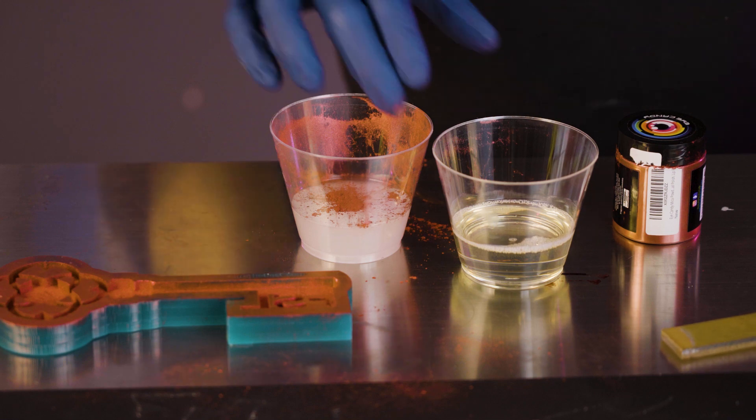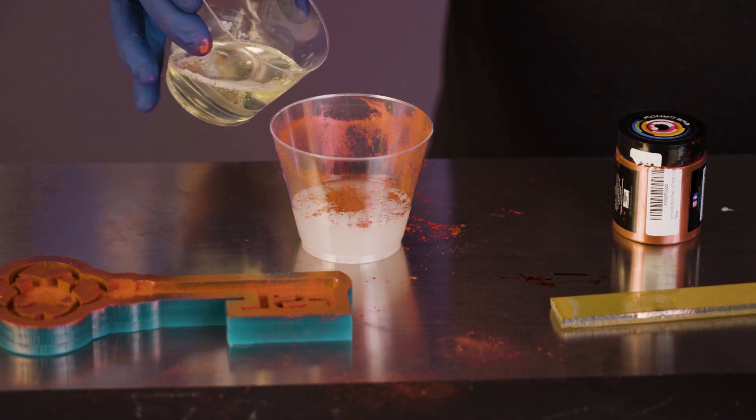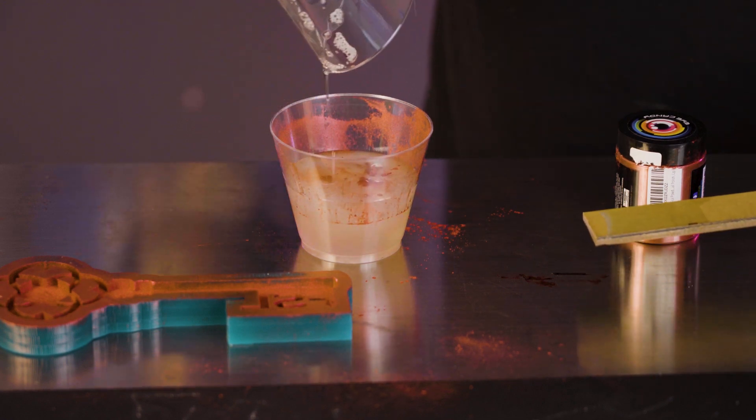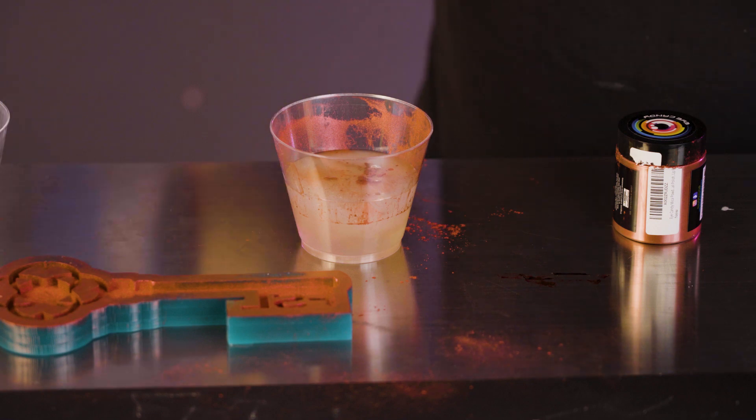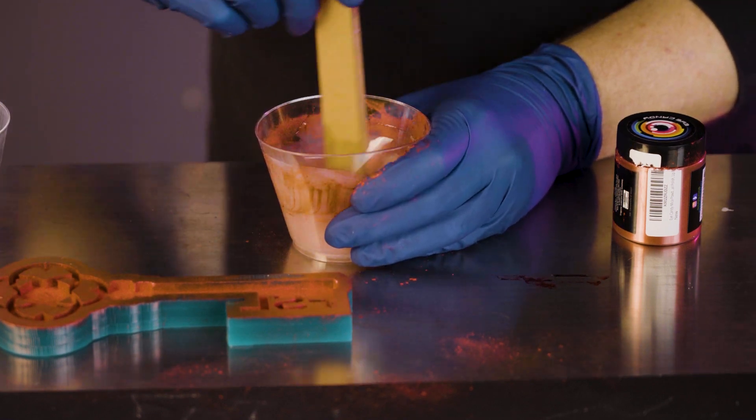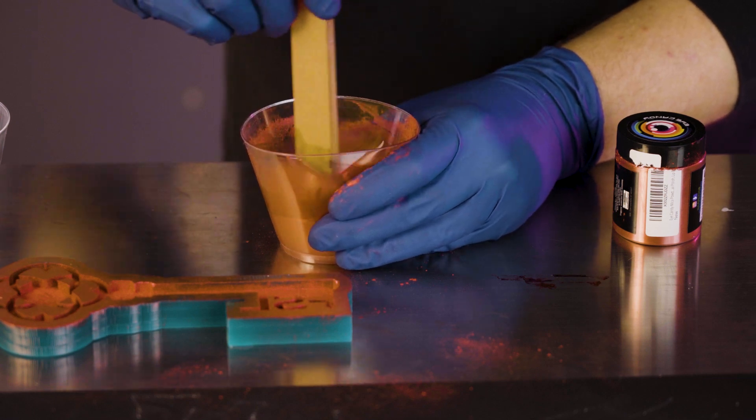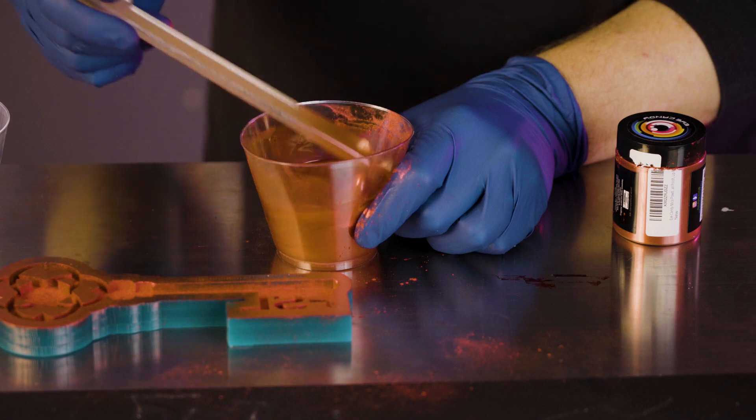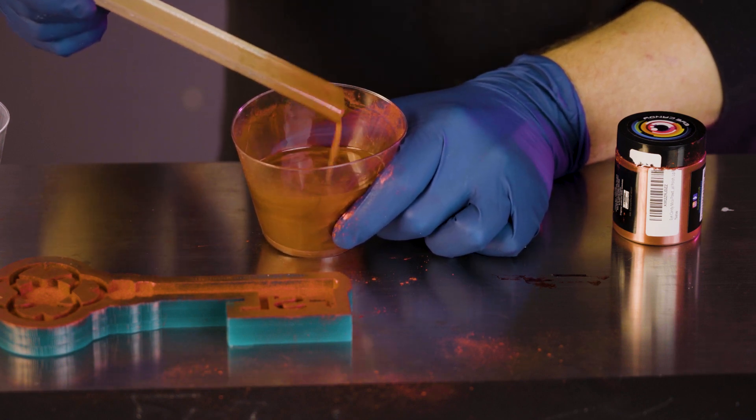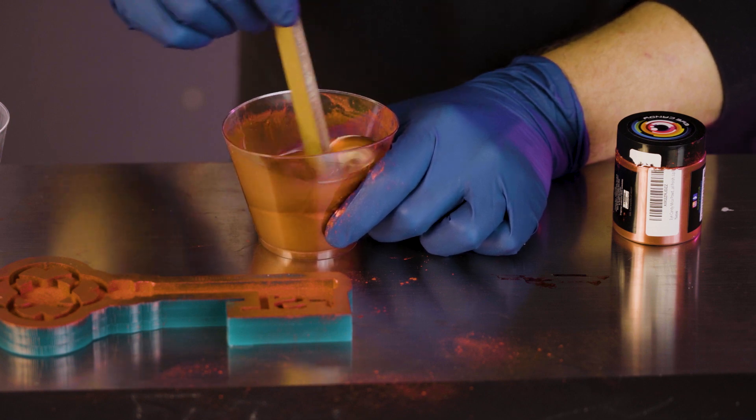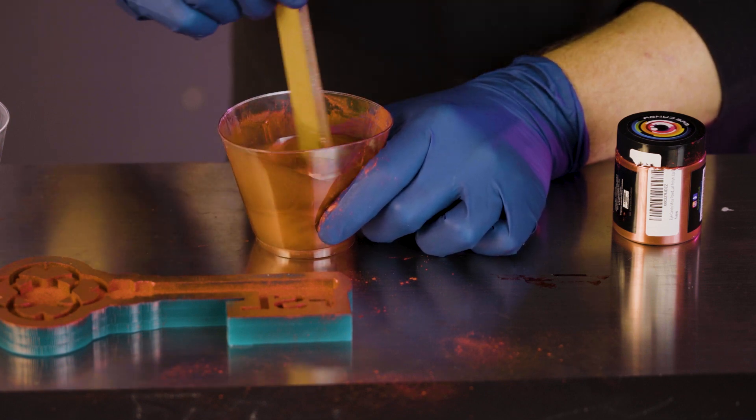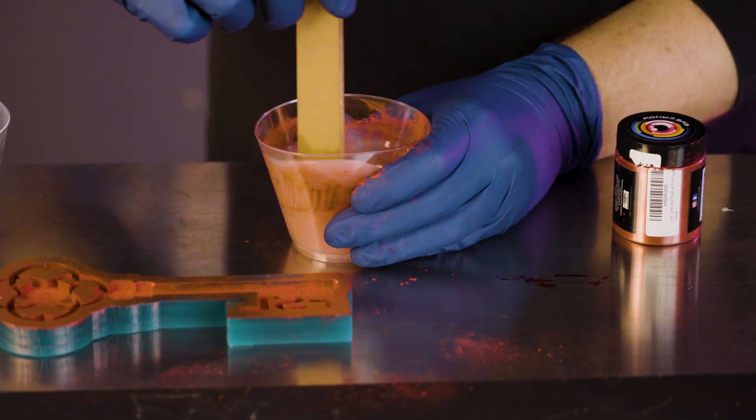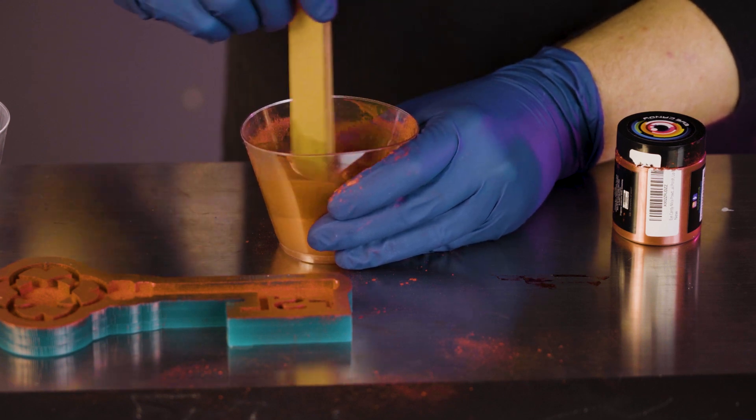Now we are going to pour our part A into part B and we are going to mix thoroughly. Get that really nice marbled color in your resin. Mix this until it starts heating up. It's got an exothermic reaction when you start mixing them and that's when it starts to kick.